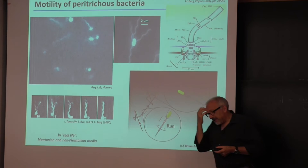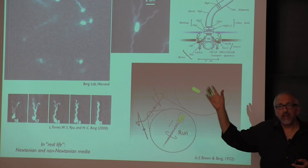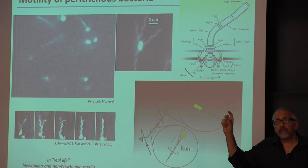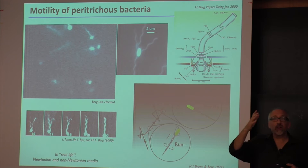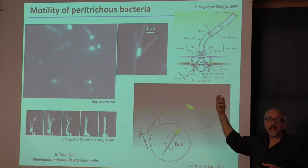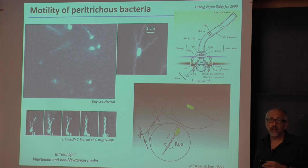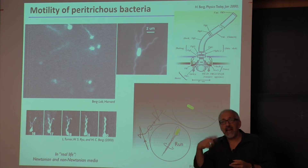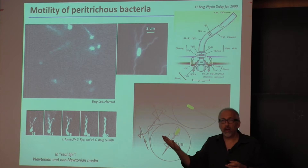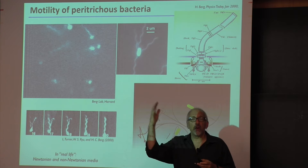The motor rotates at around 100 Hz. Each run is of the order of one second; the tumble itself is a few to tens of milliseconds. What changes is the length of time each motor stays in the counterclockwise direction — if climbing a gradient, it stays counterclockwise longer, the bundle stays together longer, and the run lasts longer.